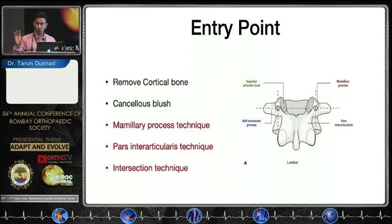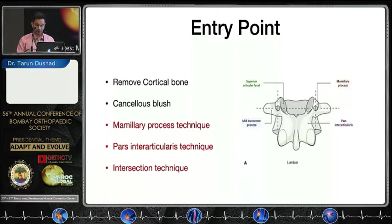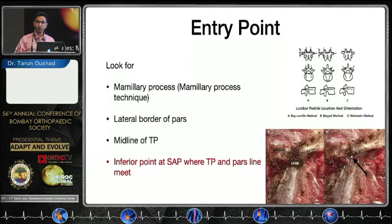To locate the entry point: since the mouth of the pedicle is cancellous, you must expose it by removing cortical bone. Several entry points are described. The mammary process technique: at the junction of pars and transverse process, there is a bulging part — the mammary process — just bite it and make the entry. The pars interarticularis technique uses the lateral border of pars and middle of the transverse process. For the intersection technique, use lateral border of facet and midline of transverse process. When facetal hypertrophy is present, I take the lateral border of pars matched with midline of TP, find where it meets the lateral border of the facet, bite that facet, and make the entry point.